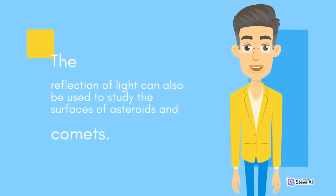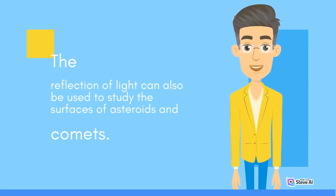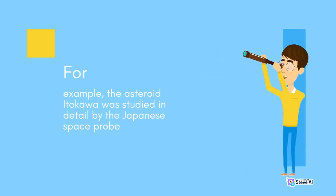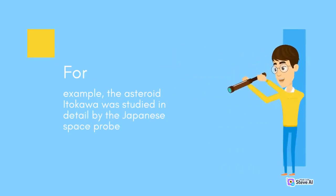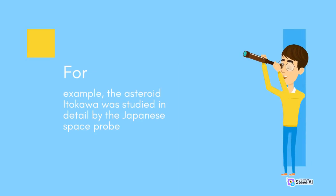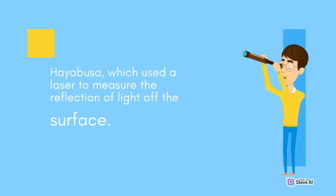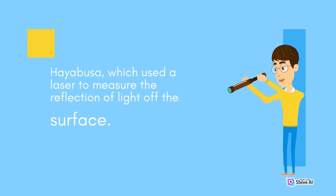The reflection of light can also be used to study the surfaces of asteroids and comets. When light reflects off the surface of an asteroid, it can reveal information about its composition, texture, and physical properties. For example, the asteroid Itokawa was studied in detail by the Japanese space probe Hayabusa, which used a laser to measure the reflection of light off the surface.